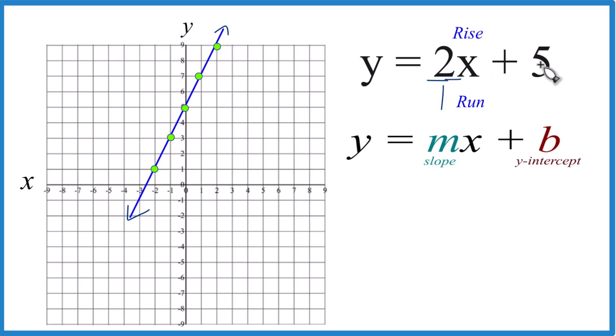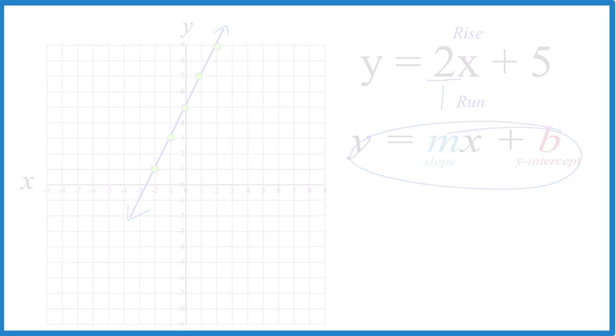And that is the graph for y equals 2x plus 5 using slope-intercept form. And this is Dr. B. Thanks for watching. We'll see you next time. Bye.